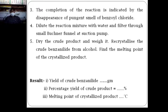Dilute the reaction mixture with water and filter using a normal funnel or Buchner funnel at a suction pump. Collect the crude product of benzoanilide and dry it. Next, recrystallize the crude product of benzoanilide using alcohol. Once recrystallization is complete, dry the crystalline product and find out its melting point.